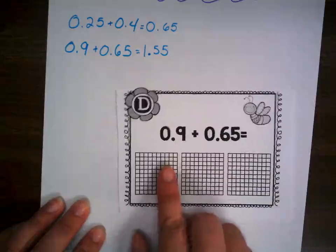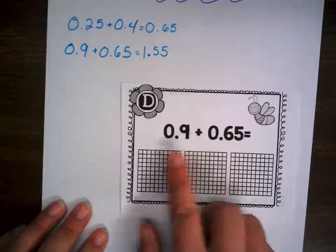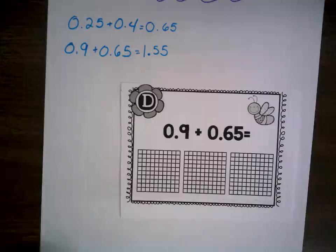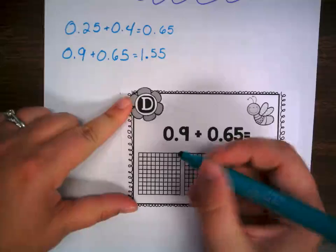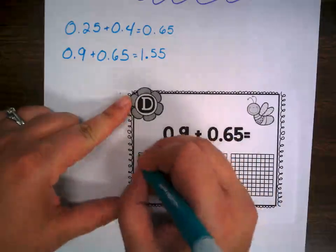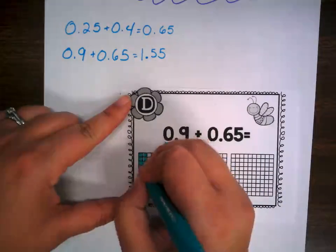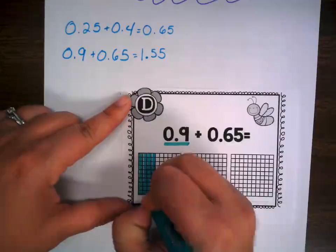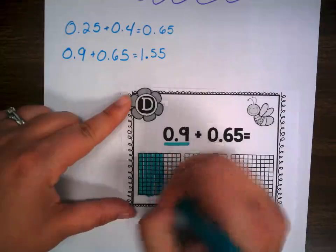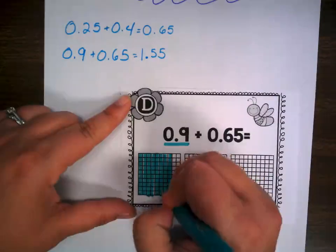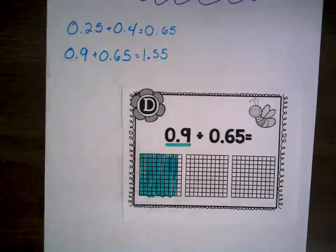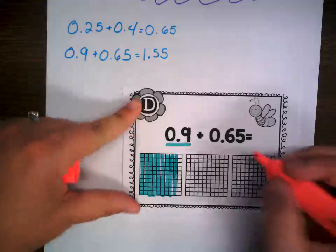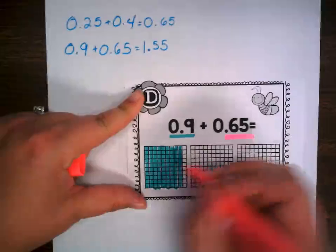Now let's go back to the other one we did and talk about 0.9 and 0.65 — nine tenths and 65 hundredths. Let's see how this happens, because I know I'm going to end up with a whole somehow. So I'm going to color code nine tenths in green — one tenth, two tenths, three tenths, four tenths, five tenths, six, seven, eight, nine tenths. Were you counting along with me?